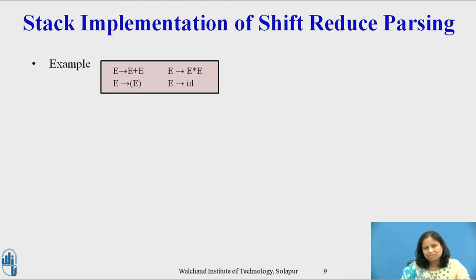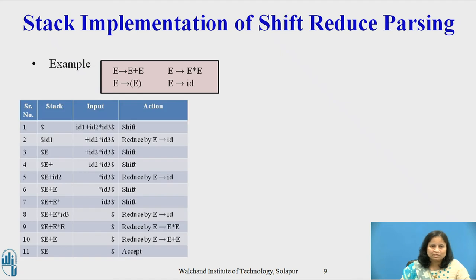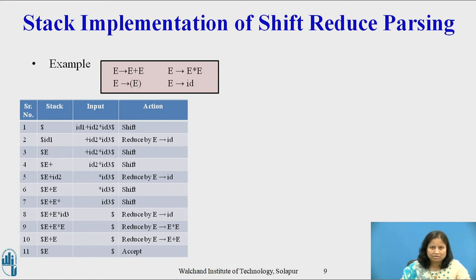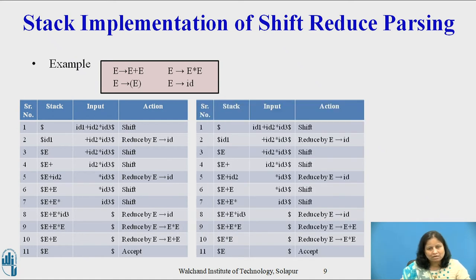Consider the stack implementation of shift-reduce parsing for id1 plus id2 into id3 using the grammar given on the slide. The first table represents the actions a shift-reduce parser might make in parsing this input string according to the given grammar. As the grammar is ambiguous, it has two rightmost derivations for this input. The second table shows another sequence of steps a shift-reduce parser might make.